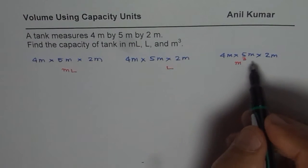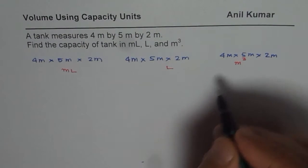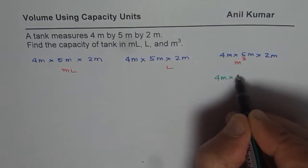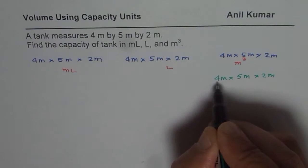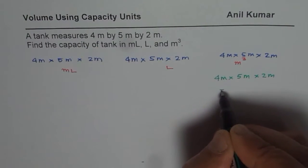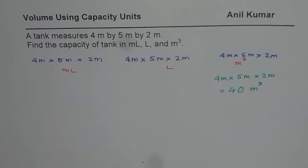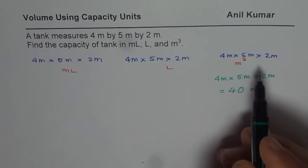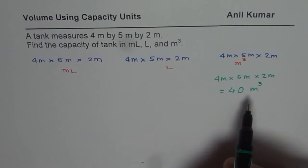Meter cube looks very logical. Let me start with this. Meter times meter times meter will give me meter cube. So let me write this as 4 meter times 5 meter times 2 meter. 4 times 5 is 20 and 20 times 2 is 40. You can use calculator also. We get 40 meter cube. So that is the capacity for this tank in meter cube.